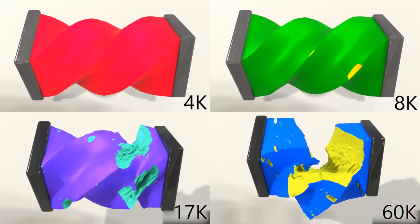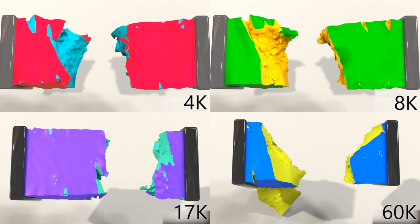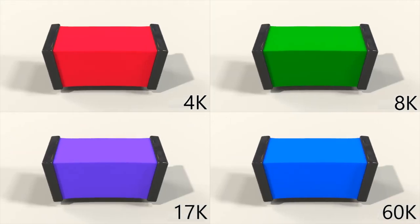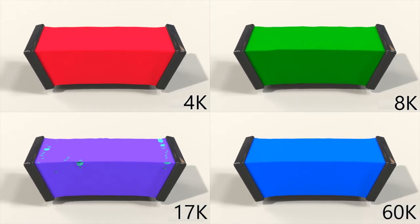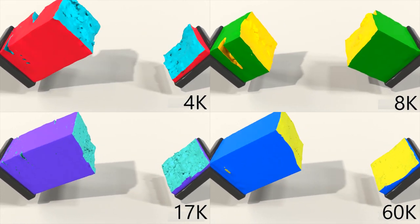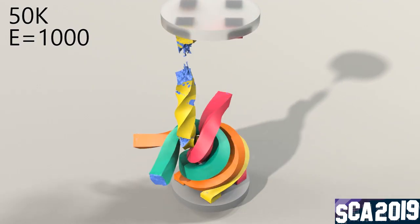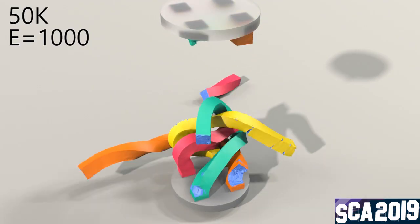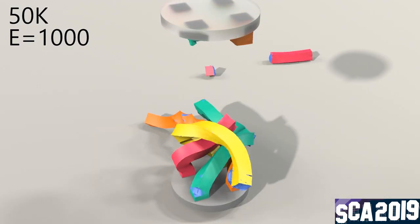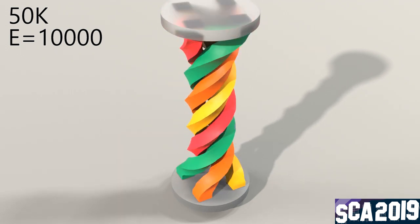Here we show more twisting results. Here we break four columns and watch them break due to torsion. See how the different stiffness parameters influence the dynamics.